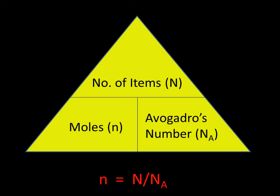We can express this mathematically as n, the number of moles, is equal to big N, the number of items, divided by big N_A, which is Avogadro's number. Lots of N's, I know, but if you use this triangle, it will help you remember how they actually fit together into the formula.